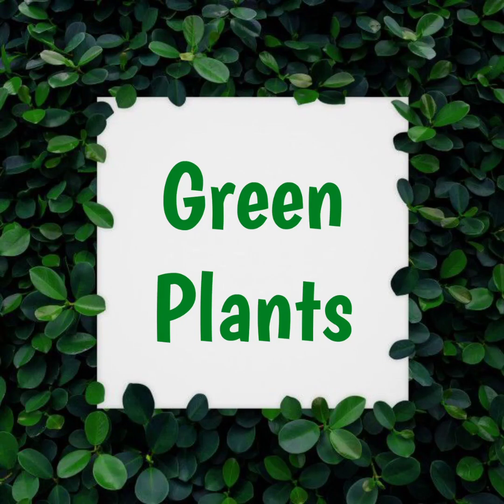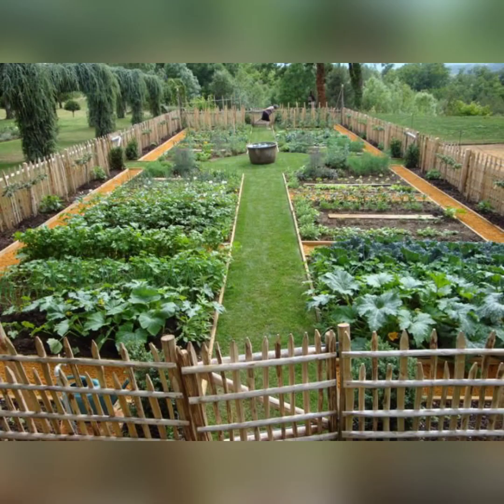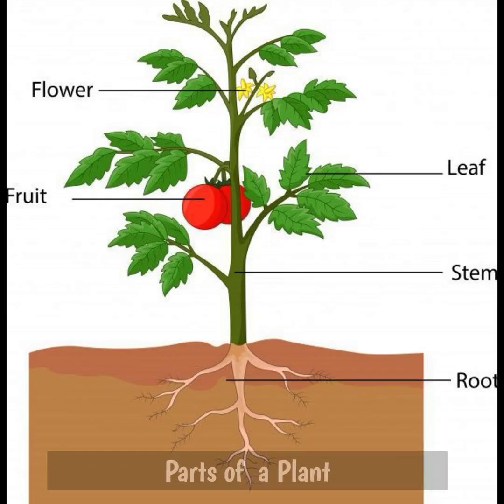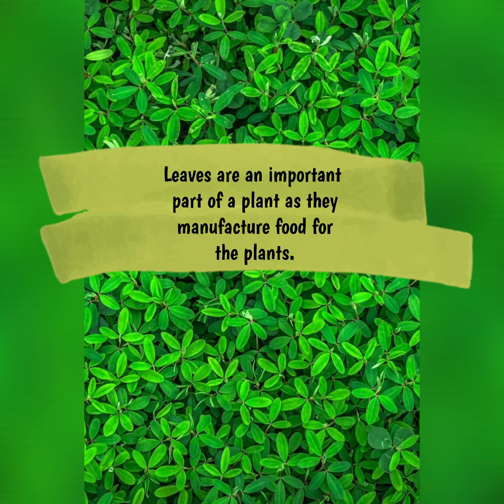Hello children, welcome back to your science online class. Today we are going to learn about green plants. As you all know, plants are one of the most important living things, as they provide us with not only food but also the oxygen we need to live. Plants have different parts like the leaf, stem, root, fruit, and flower.